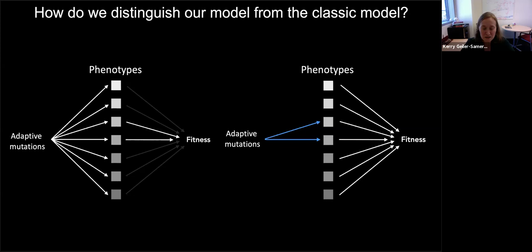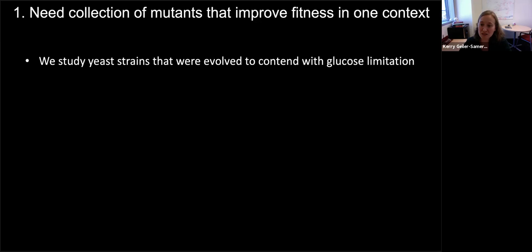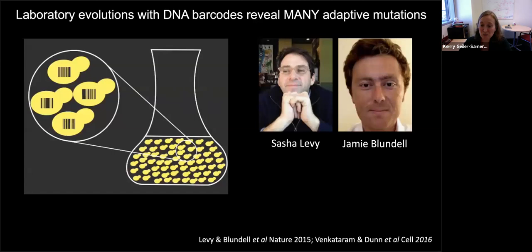To get a lot of mutants, we found a collection of yeast strains evolved to contend with glucose limitation. These yeast strains ran out of glucose every 48 hours and had to run on fumes until it was replenished. They were evolved by three labs at Stanford, with this project led by Sasha Levy and Jamie Blendell. The yeast they started with were all genetically identical except for a DNA barcode — a 26 base pair region of DNA differentiating every strain in the flask. Eventually, mutations emerged that helped them deal with glucose limitation, rose to high frequency, and took over.